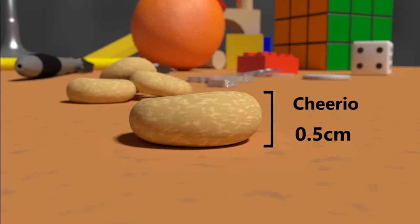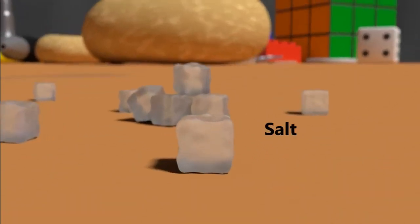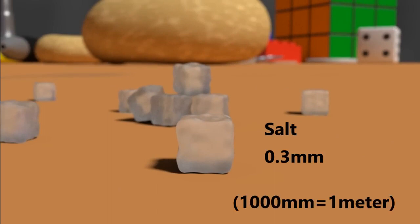Its height is about half of a centimeter. For comparison, there are 100 centimeters in a meter. Let's go smaller. A grain of salt. This is about 0.3 millimeters. There are 1,000 millimeters in a meter.